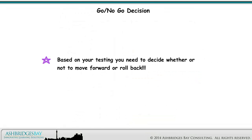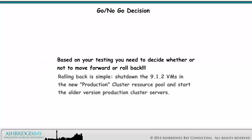Based on your testing, you need to decide whether or not to move forward or roll back. Rolling back is simple: shut down the 9.1.2 VMs in the new Production Cluster Resource Pool and start the older version Production Cluster Servers.